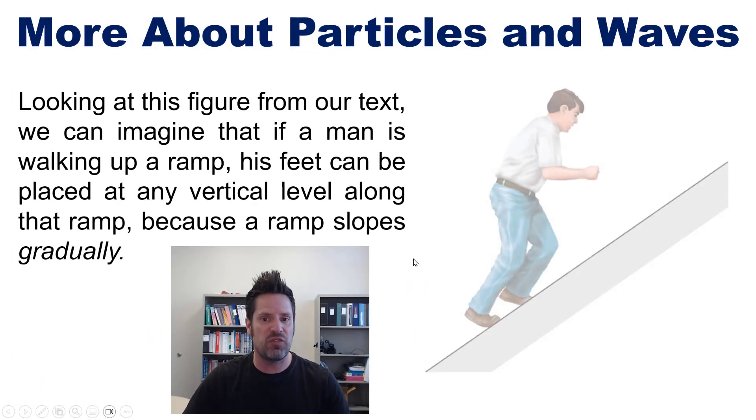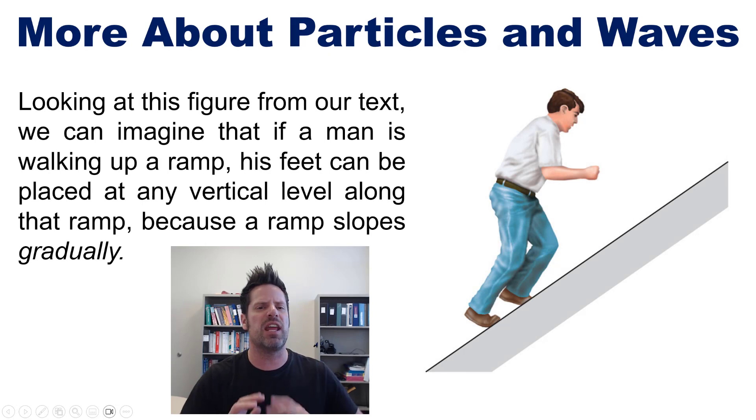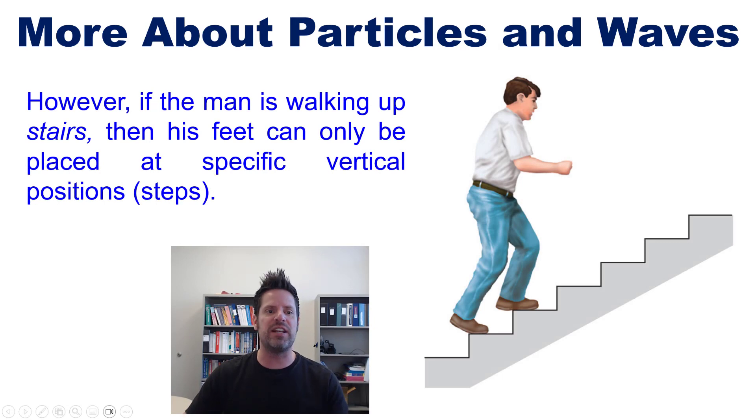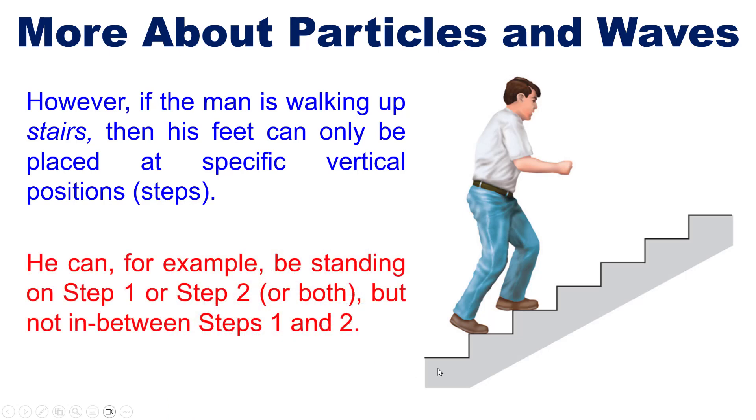Looking at this figure from our text we can imagine that if a man were walking up a ramp his feet could be placed at any vertical level along that ramp because a ramp slopes gradually. However if the man were walking upstairs then his feet could only be placed at specific vertical positions or steps.